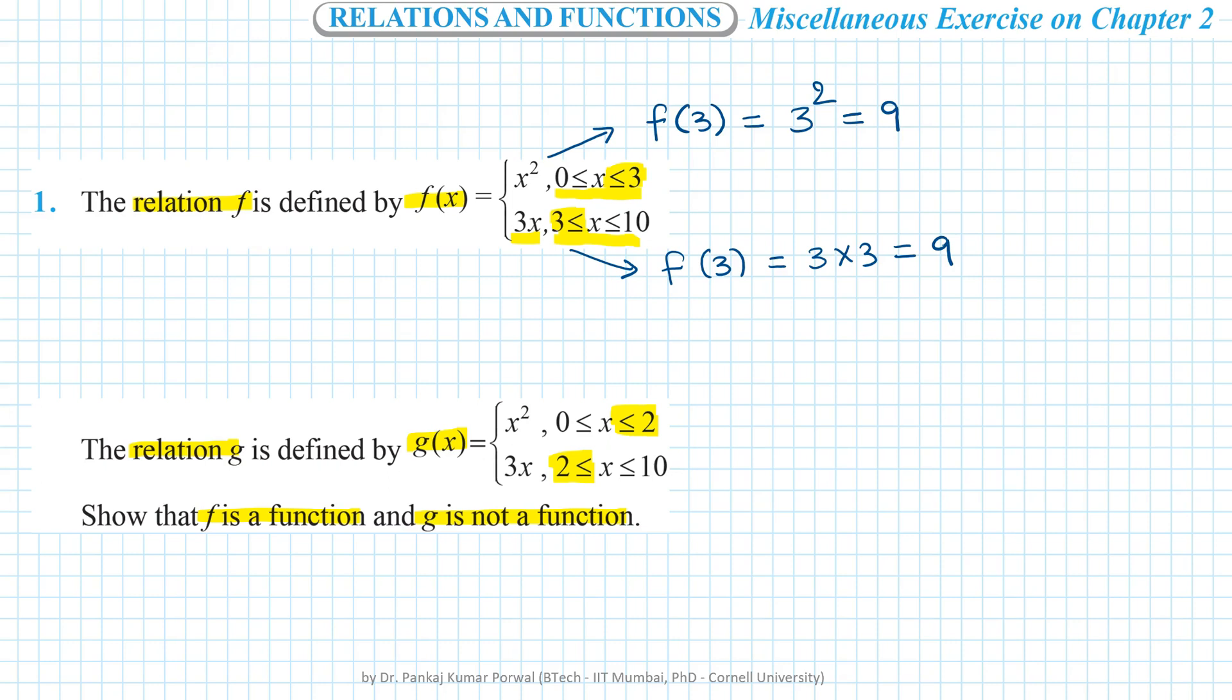So let us find the two images under g for x equals to 2. So if I use this definition, g(2) will give me 2 squared, that is 4. And if I use this definition, I get g(2) equals to 3 into 2, that is 6.